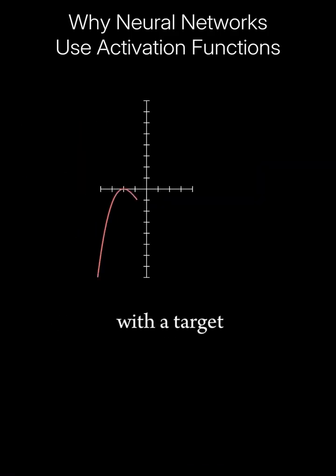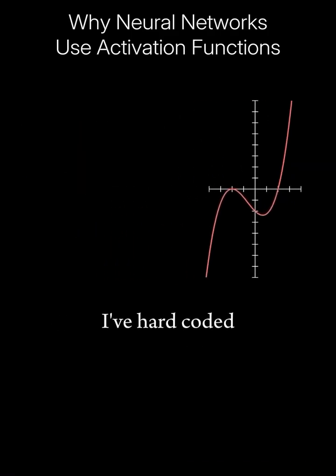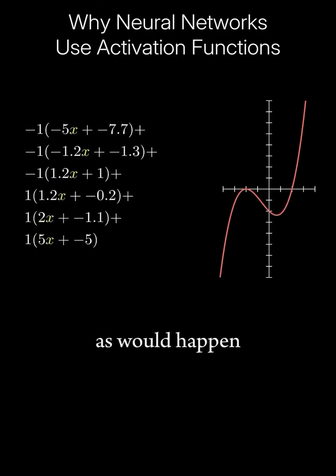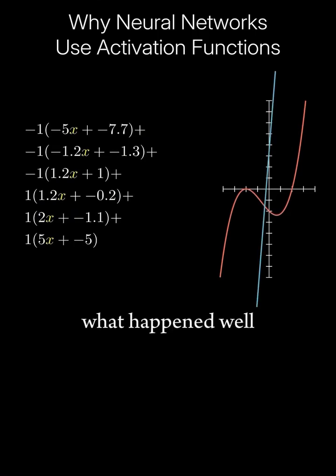So let's start with a target function, one we want to approximate. I've hard-coded a bunch of neurons whose parameters were found manually, and if we weight each one and add them up as would happen in the final neuron of the network, what happened?